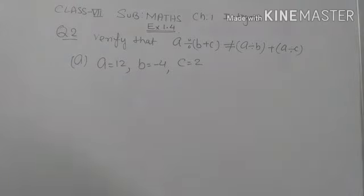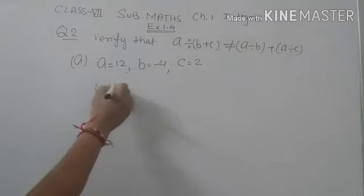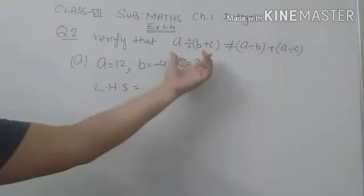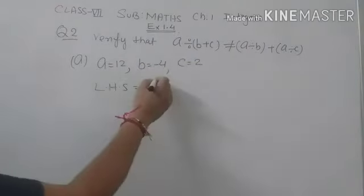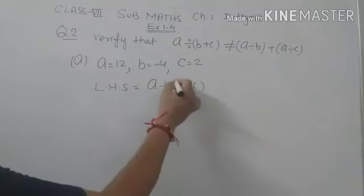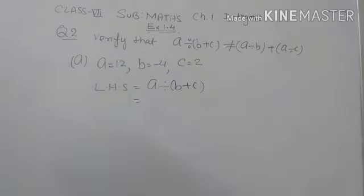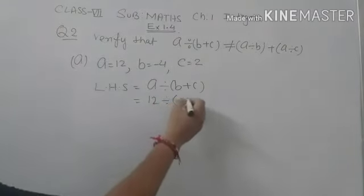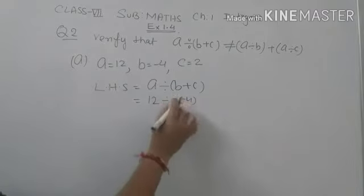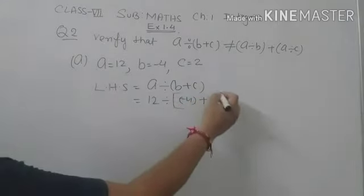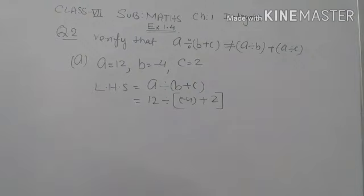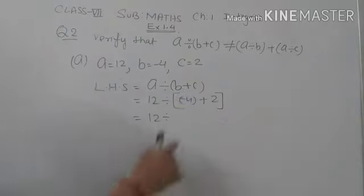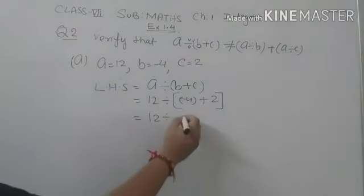So first we take LHS, left hand side. LHS is A divided by (B plus C). Now put these values in: 12 divided by (minus 4 plus 2). Now solve this — first we solve this bracket: minus 4 plus 2 gives minus 2.